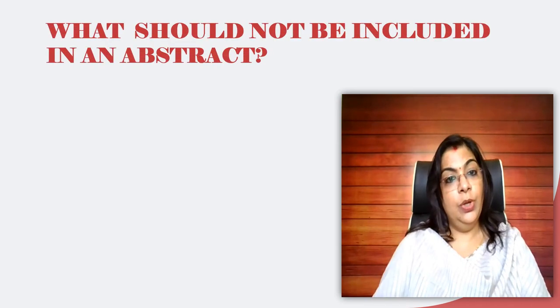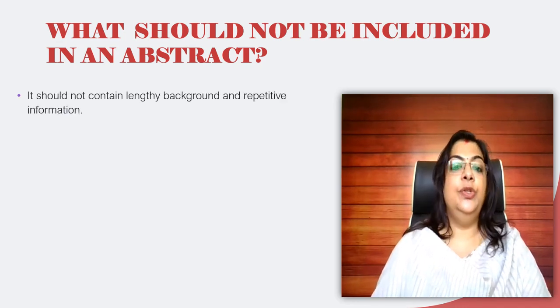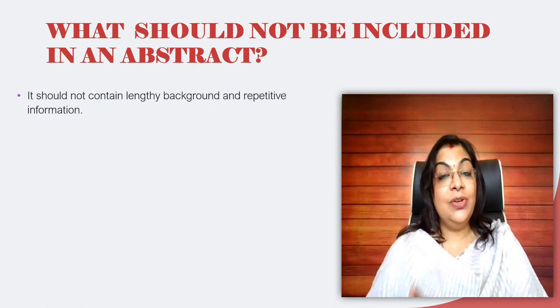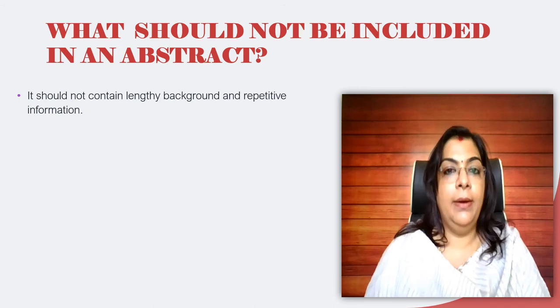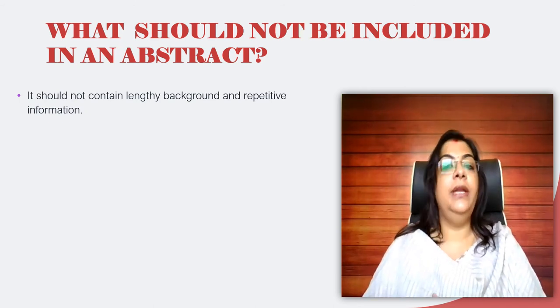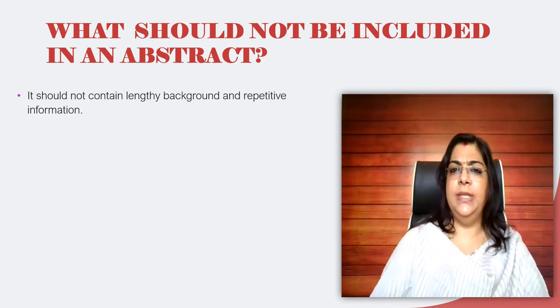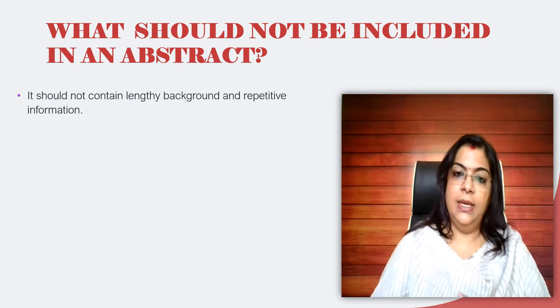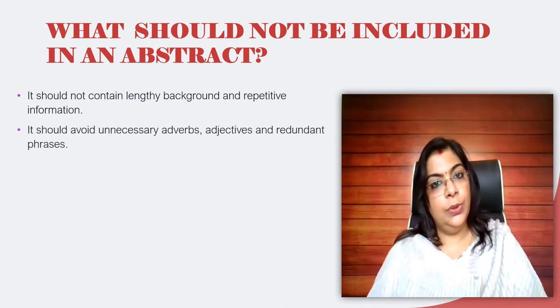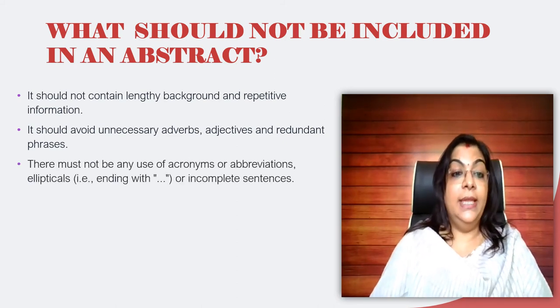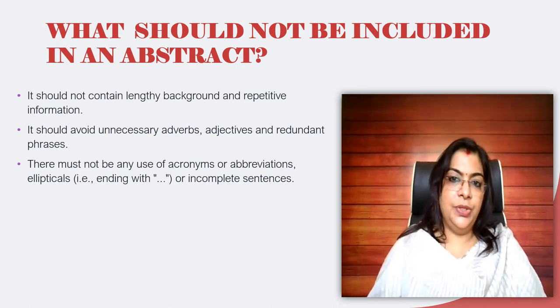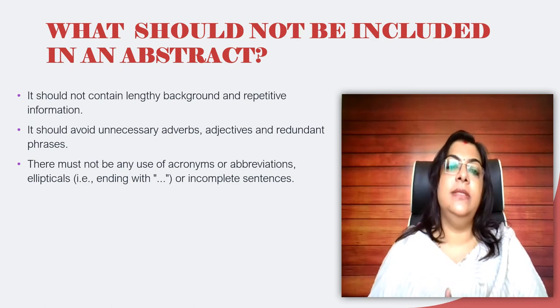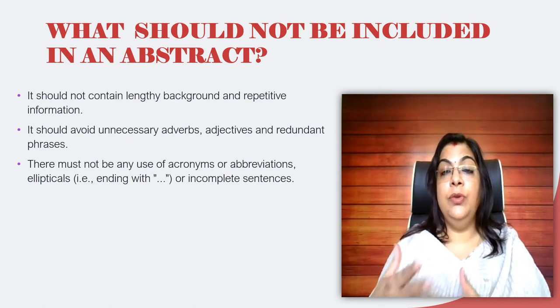The next segment is really very important — it is equally important to know what should NOT be included in an abstract. The first thing is your abstract must not contain very lengthy information about the background of your topic. There must not be any repetitive information — it should be written in one or two sentences, maximum three sentences. Similarly, you should avoid using adverbs, adjectives, or redundant phrases. There must not be any use of acronyms or abbreviations, or any incomplete sentences in the abstract.